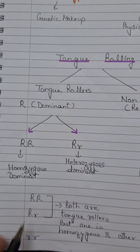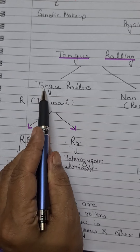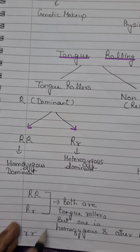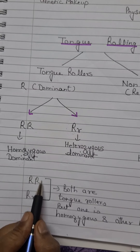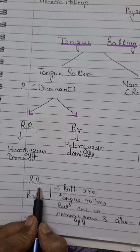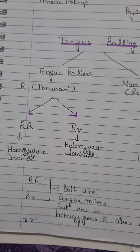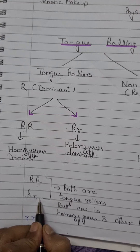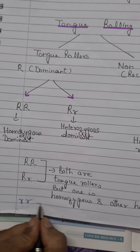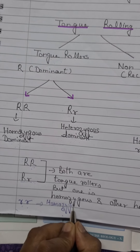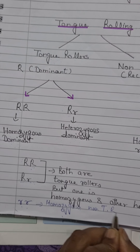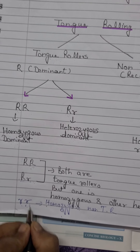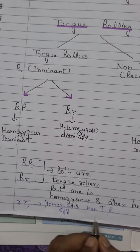Tongue rolling is a character with three types of genotype, but phenotype is of only two types — whether the person is able to roll their tongue (tongue roller) or not (non-tongue roller). Genotype is of three different types: a person can be a homozygous tongue roller (both alleles dominant), a heterozygous tongue roller (one dominant, one recessive), or a homozygous non-tongue roller (both alleles recessive, expressing the recessive trait of non-tongue rolling).